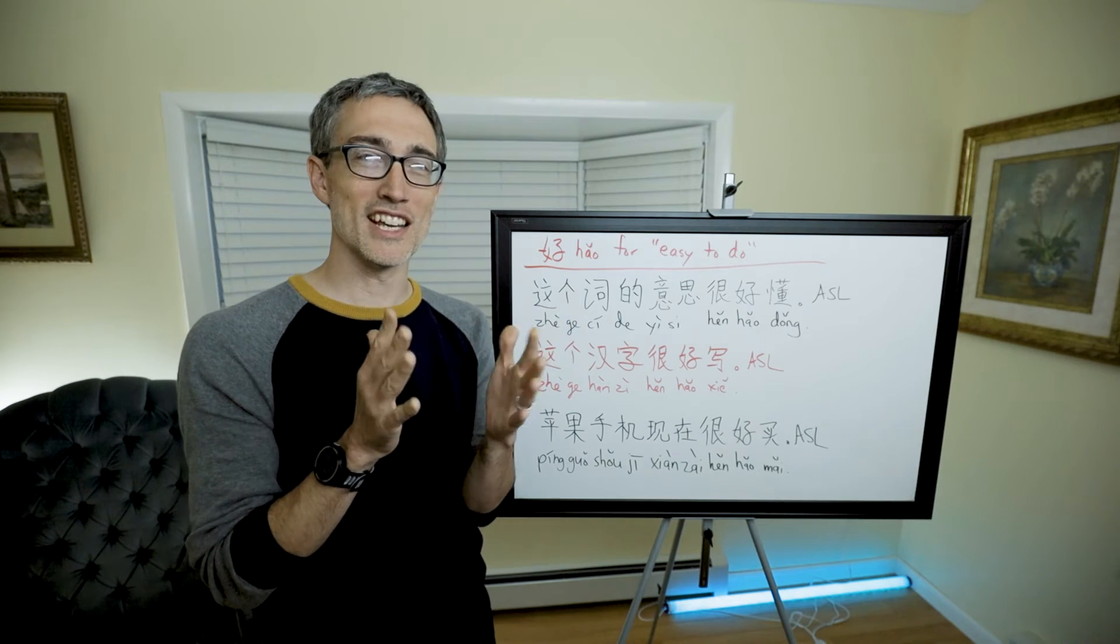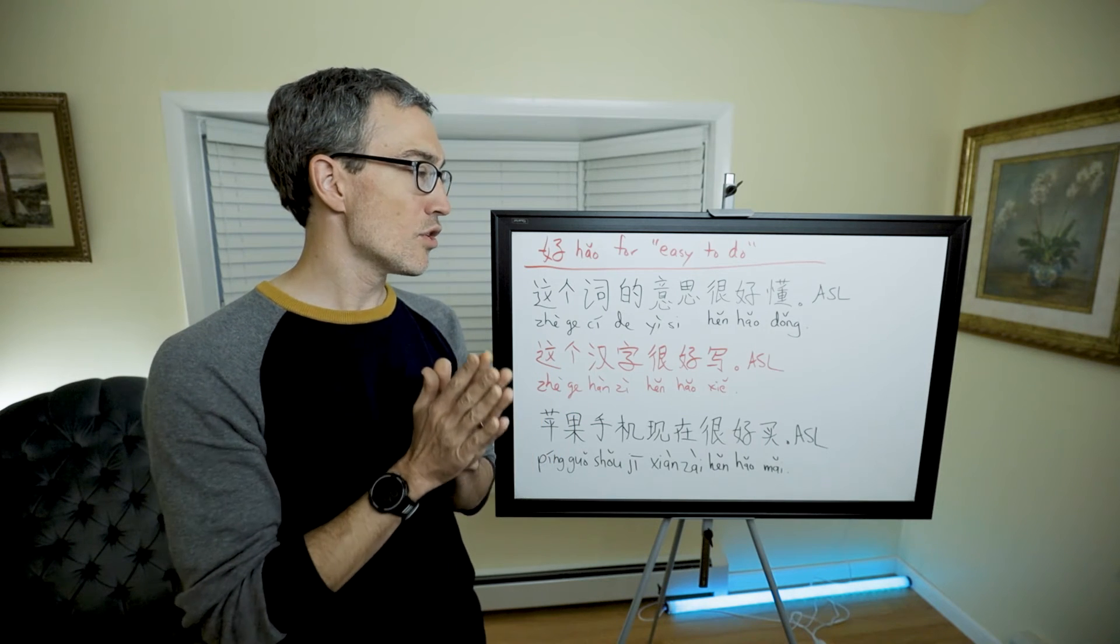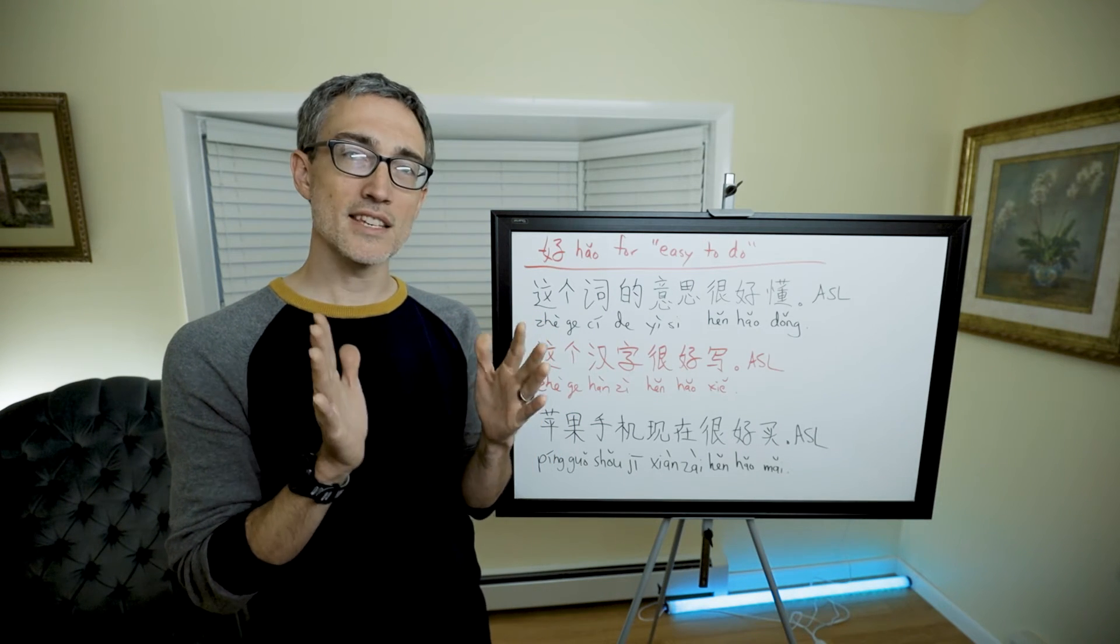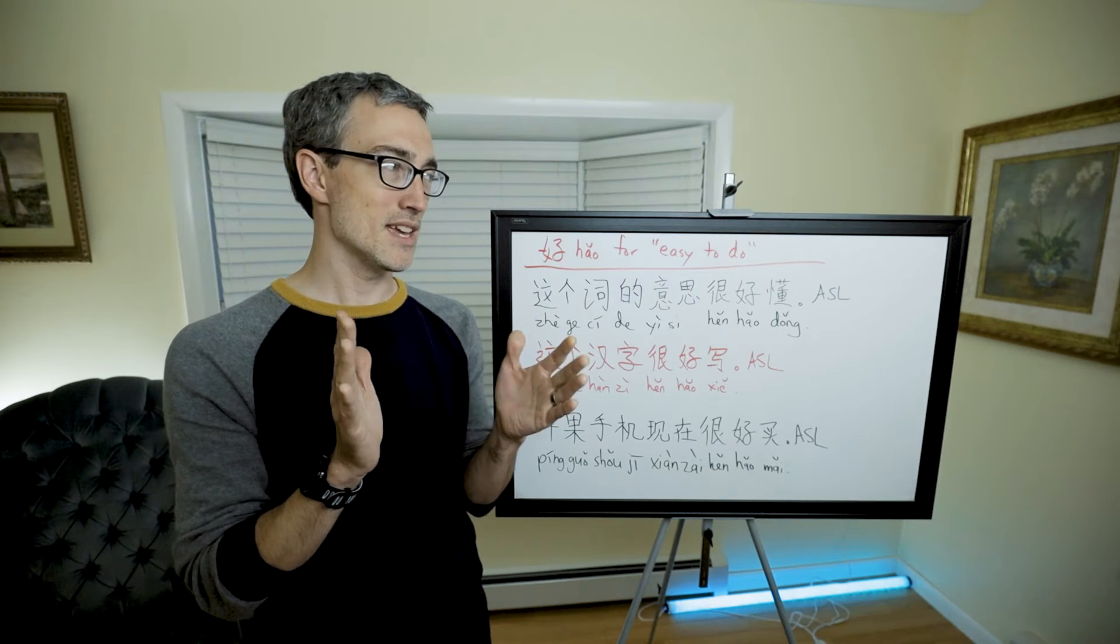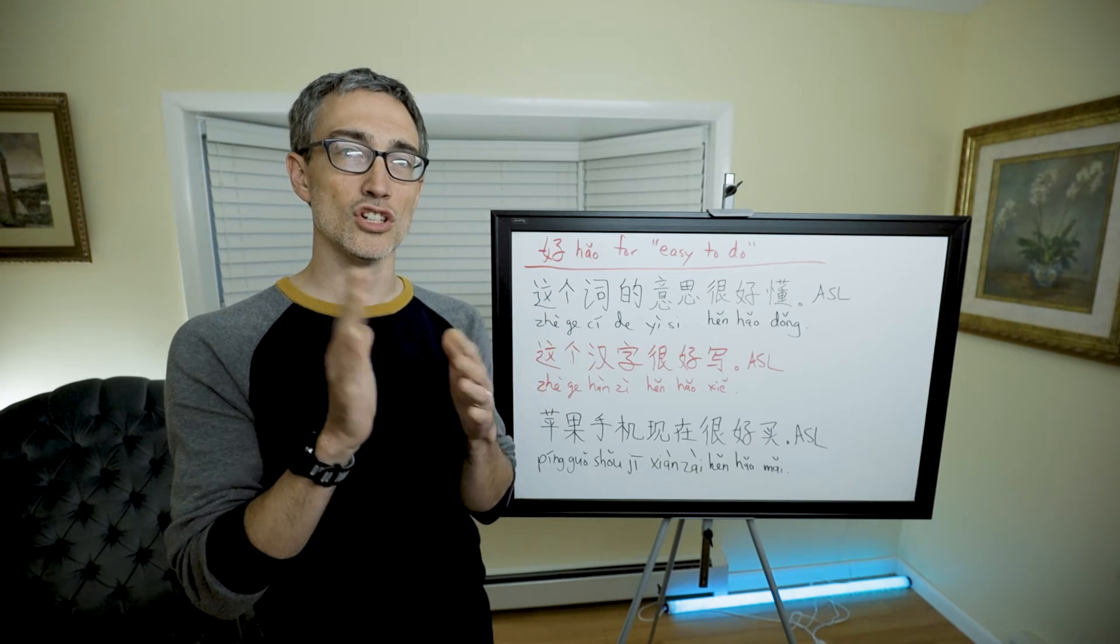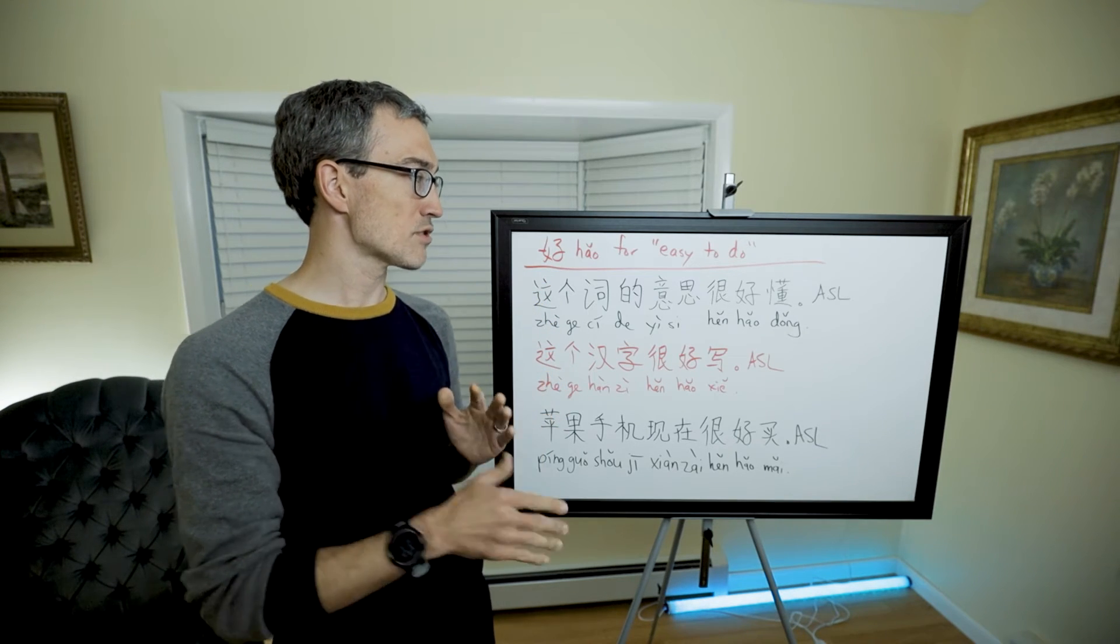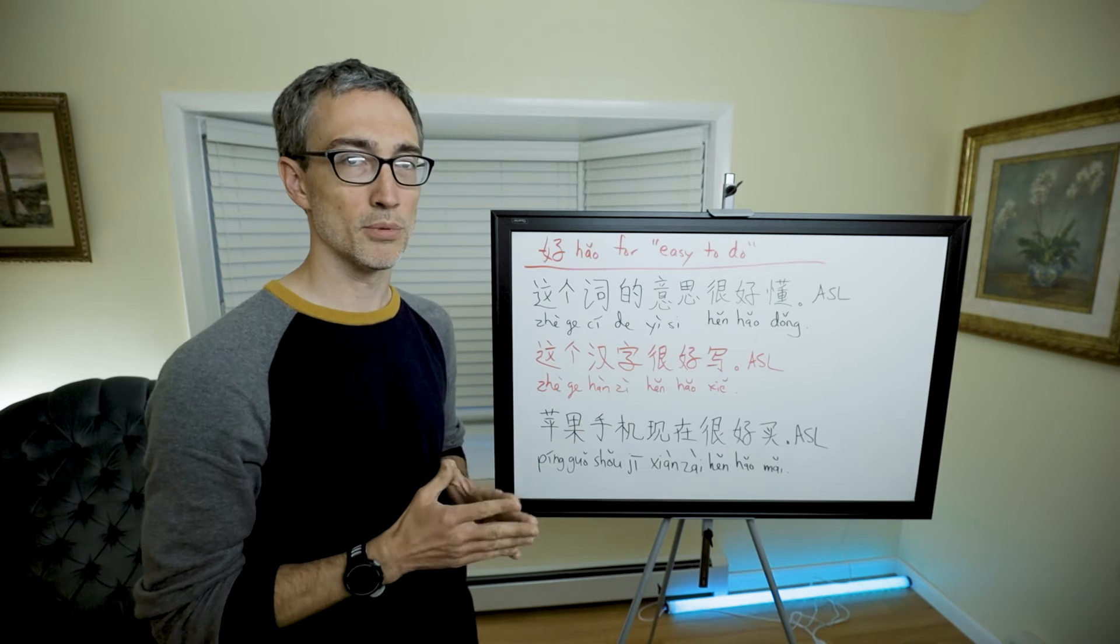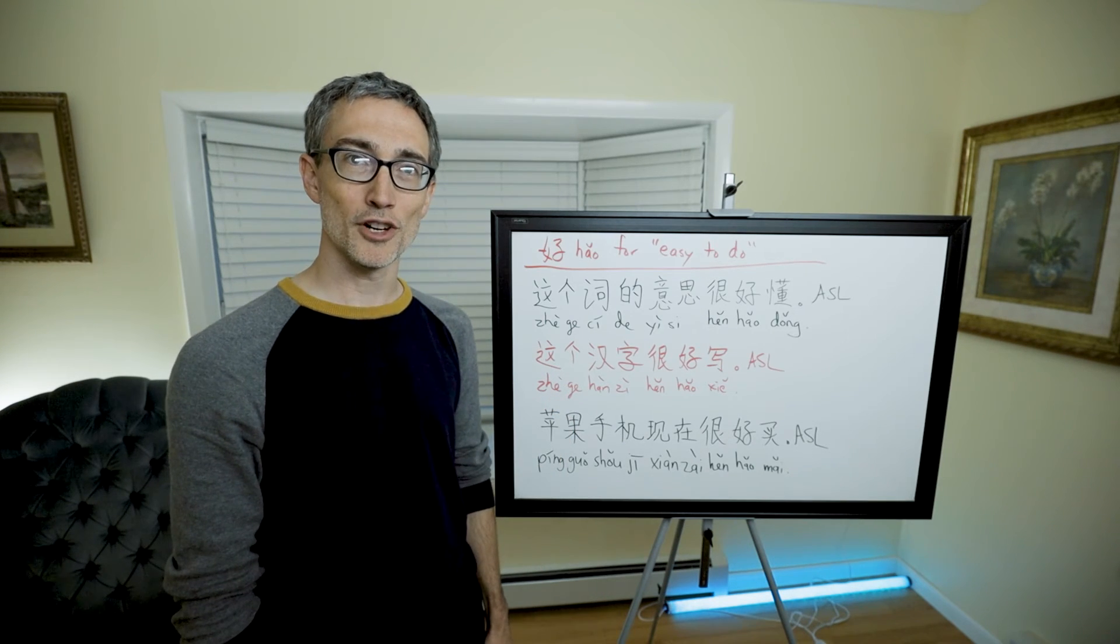好喝 means it drinks good, it's good to drink, it tastes good. Those are all sensing verbs, and when you put 好 before them it doesn't mean easy to do, it means good to do. It's in the form of an adjective. Those are exceptions to this concept.